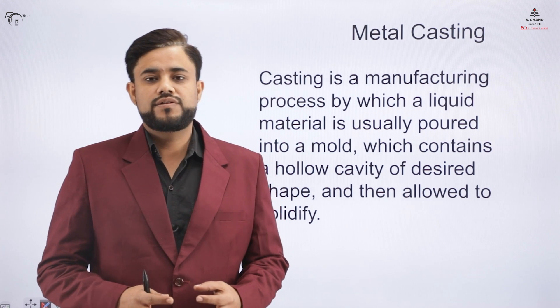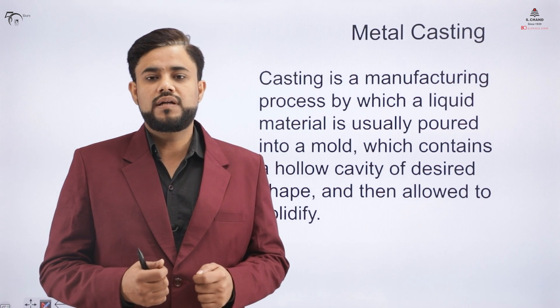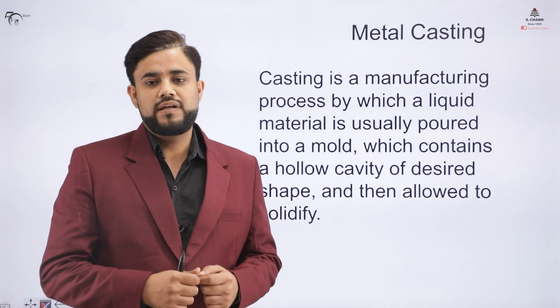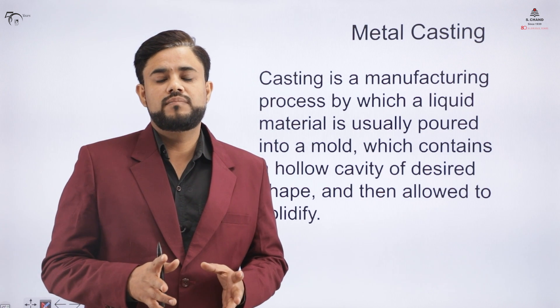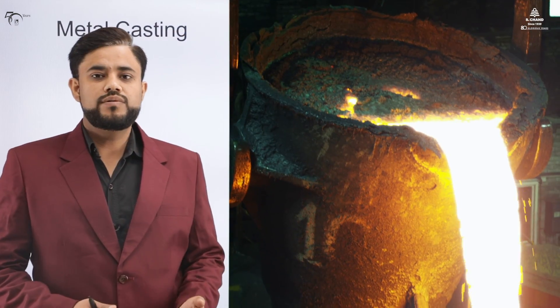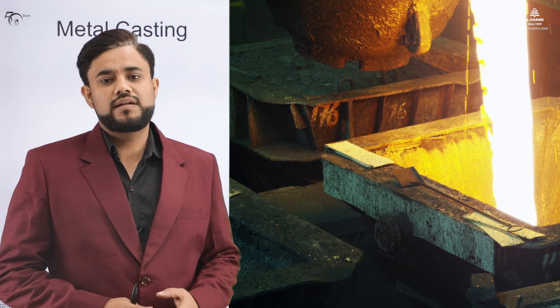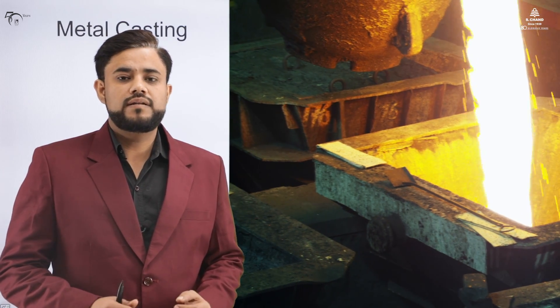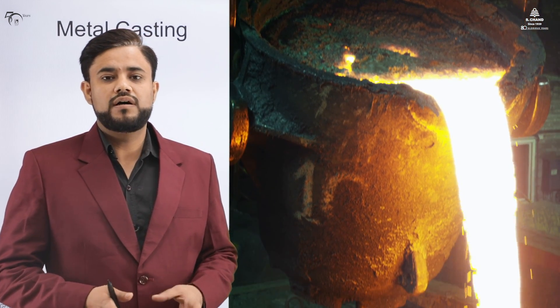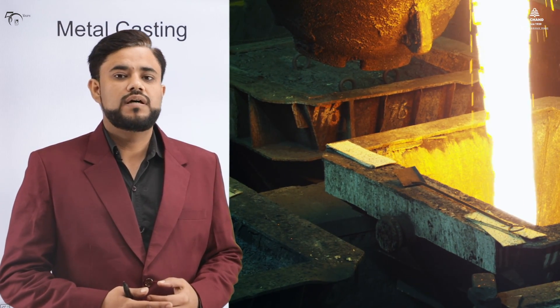Casting is basically a process in which a metal is melted to the liquid state and then that liquid metal is poured into a cavity called a mold. We wait for the metal to solidify and then the final desired shape is produced. The video on screen shows the metal casting process — molten metal in a crucible being poured into a hollow cavity called the mold, and after solidification the final desired product is achieved.